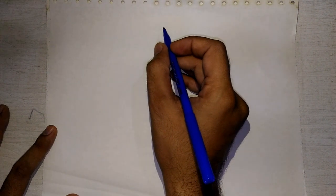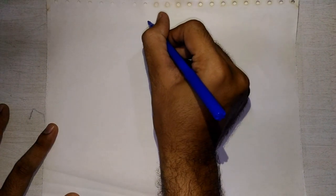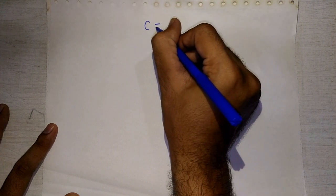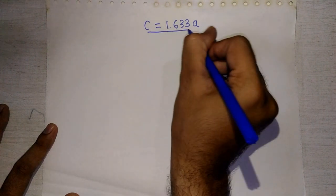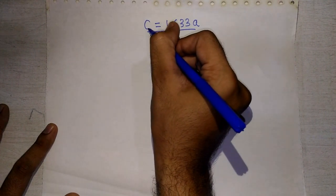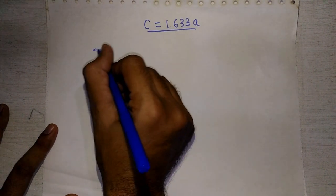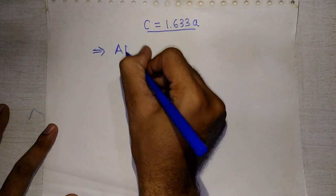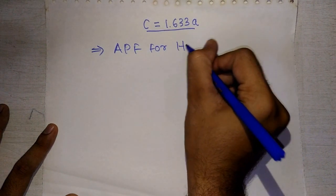In the previous lecture we discussed the relation between edge length and height of the unit cell for HCP, and we derived the relation C = 1.633A, where A is the edge length and C is the height of the unit cell. Now let us continue the calculation of APF for the HCP unit cell.